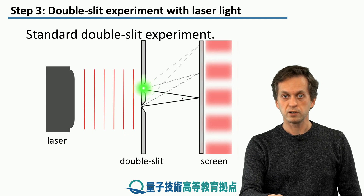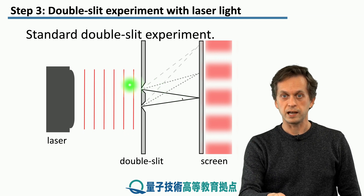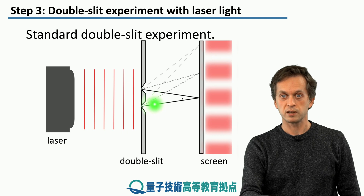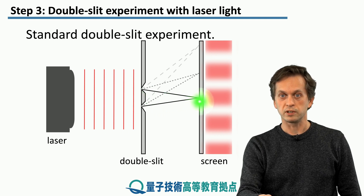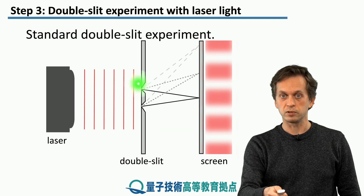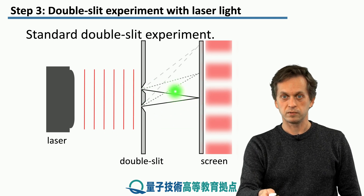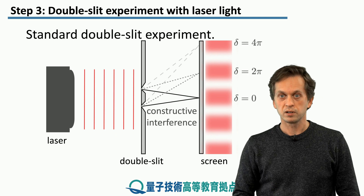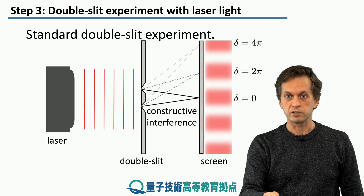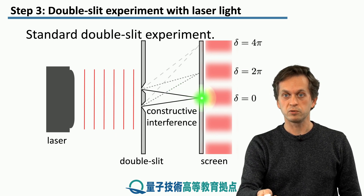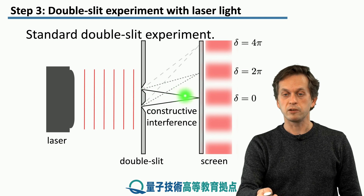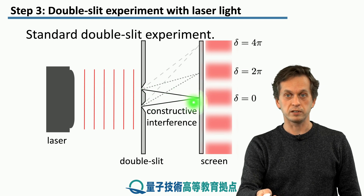For example, here we see the light coming from the top slit and light coming from the bottom slit going towards the screen. The path length of these two paths are equal; therefore, there is no phase difference between the two waves coming from the top slit and the bottom slit, and we observe constructive interference.